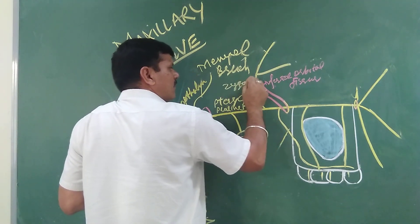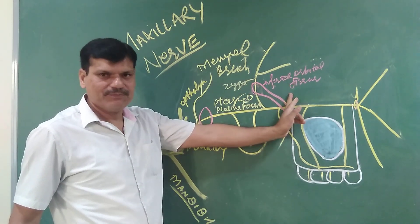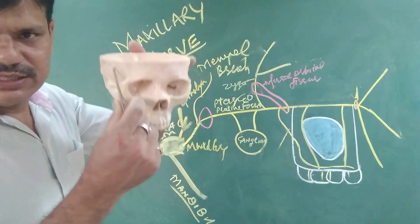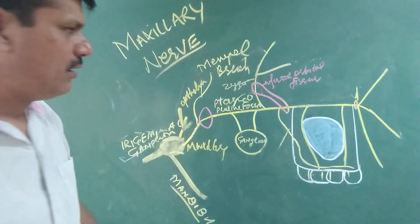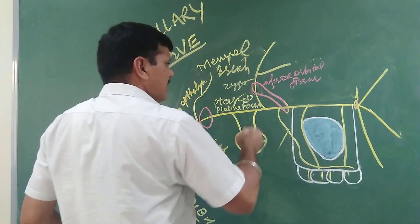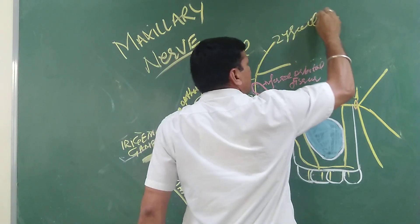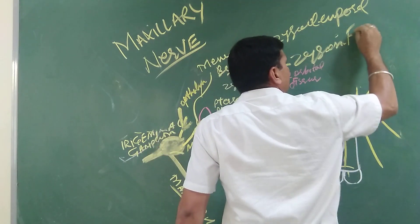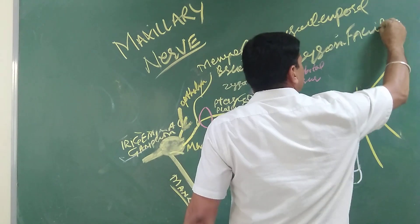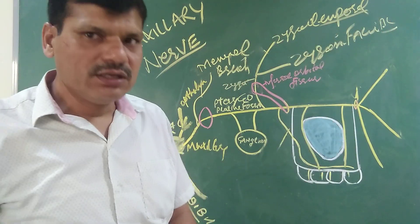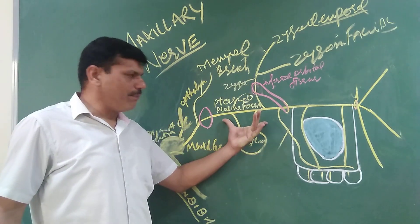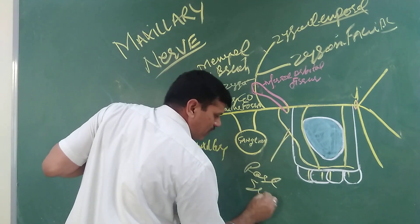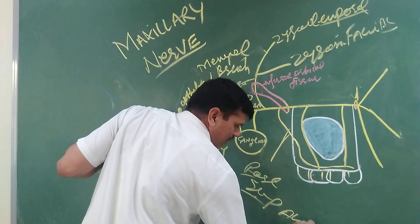The zygomatic branch passes through the inferior orbital fissure, lies in the lateral wall of the eye orbit, and passes into the zygomatic bone. Before and after passing through the zygomatic bone, it gives two branches: one is zygomaticotemporal to the temporal area, and another is zygomaticofacial, which supplies to the cheeks. The third branch in the pterygopalatine fossa is the posterior superior alveolar nerve.